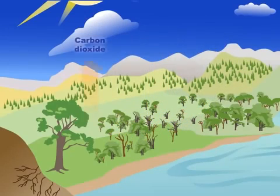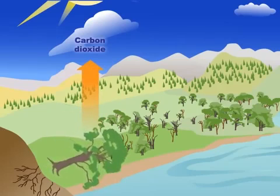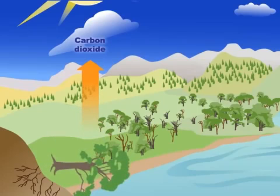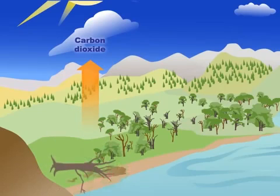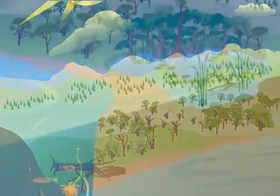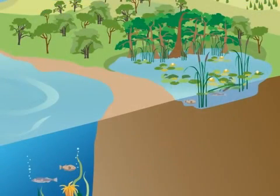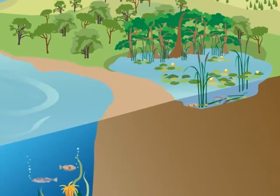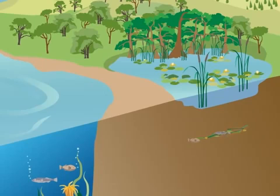Carbon dioxide also goes back into the atmosphere when plants and animals die and decompose. In certain places, like swamps and the bottom of the ocean, dead plants and animals don't completely decompose, and they end up buried in layers of sediments.